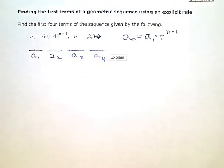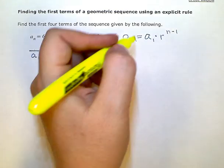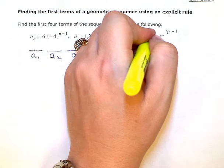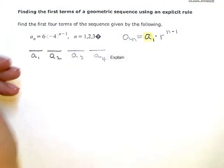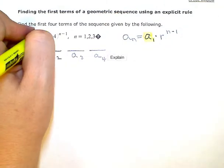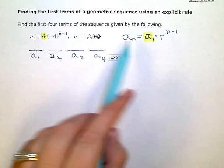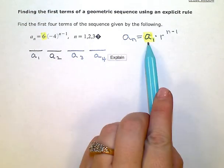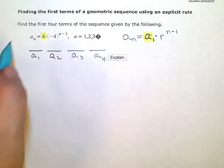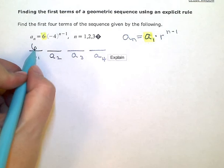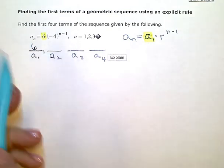If we compare this to the actual sequence that I have, this number a sub 1 in my general form corresponds to the 6 in this specific equation I'm looking at. That means the 6 is my a sub 1 or my first term. I already have the first term of my sequence just by looking at my formula.